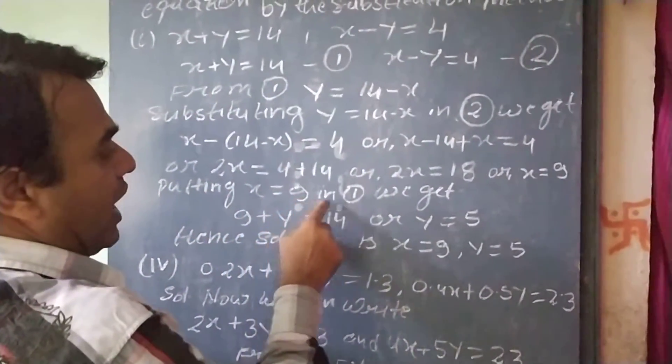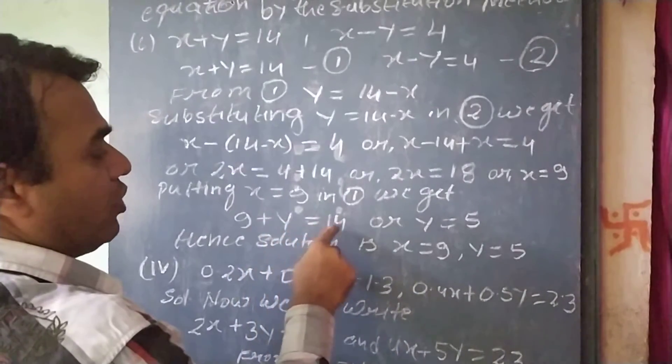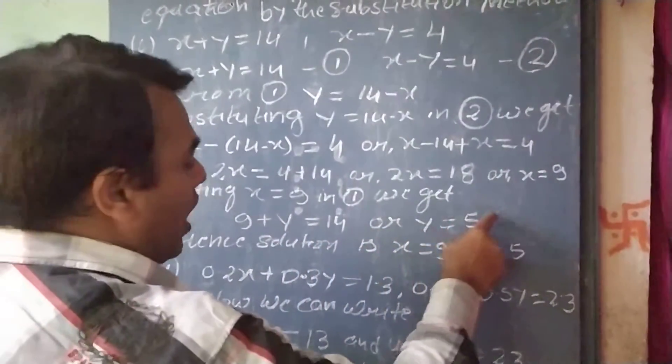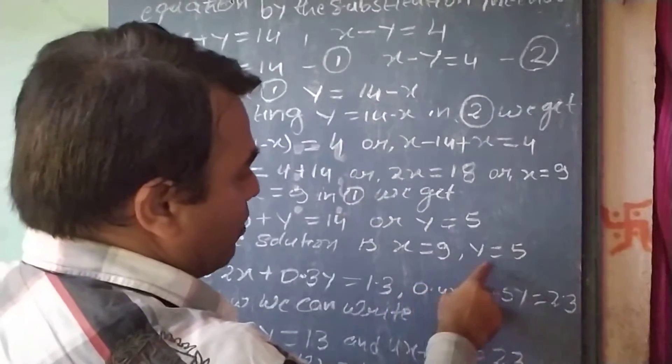Now, putting x equal to 9 in equation 1, we get 9 plus y equal to 14, or y equal to 5. Hence, the solution is x equal to 9 and y equal to 5.